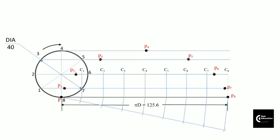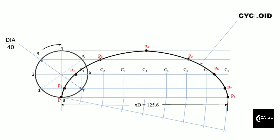Once you get all the respective points, draw a smooth curve passing through all of them. This is the cycloid curve, where we have traced point P present on the circumference of the circle as it rolls on a straight line path for one complete revolution. There are other types of cycloids as well — one is the epicycloid and the second is the hypocycloid. Till then, you can practice these curves. Thank you.